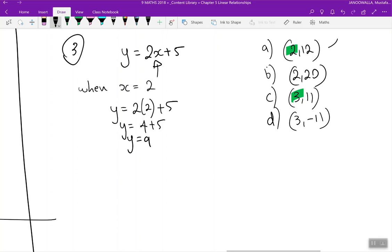Now look at option A. When x is 2, y is 12, that means this is wrong. Part B, when x is 2, y is 20, that's wrong too because we've got y is 9. So those two points do not pass through that equation.